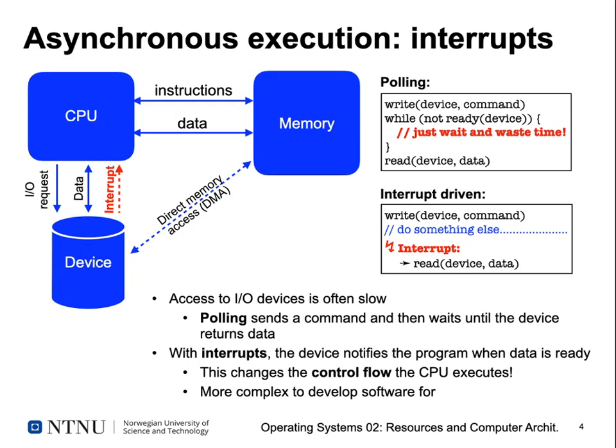Interrupts are an important component of modern systems because they enable us to waste less compute time. If you didn't have interrupts, your access to IO devices would have to use a method we call polling. Polling means you send an IO request, write a command to a device, and then check the device in a loop. As long as the device has not indicated it has finished its task — so it's not ready — you just do nothing except waiting and checking.